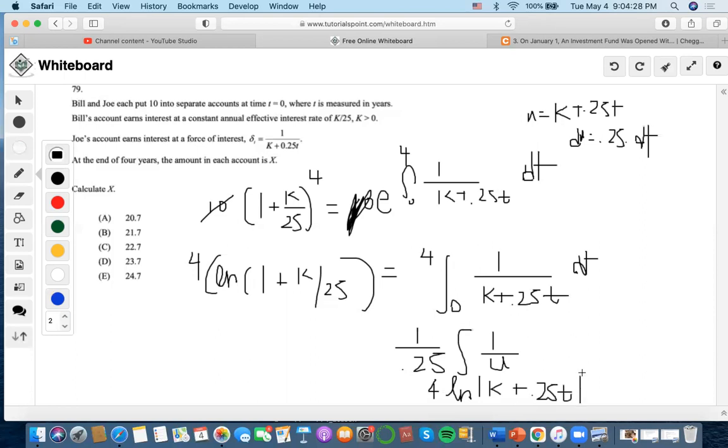Now we can plug in 4 and 0. The first part is ln(K + 1), and the second part when you plug in is ln(K).